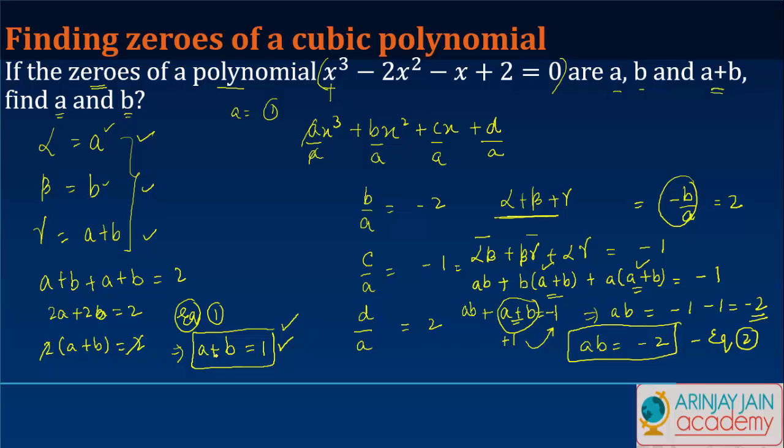Equation 1 says the sum of these two numbers is 1. Equation 2 says the product is -2. Solving these two equations gives a = -1 and b = 2.